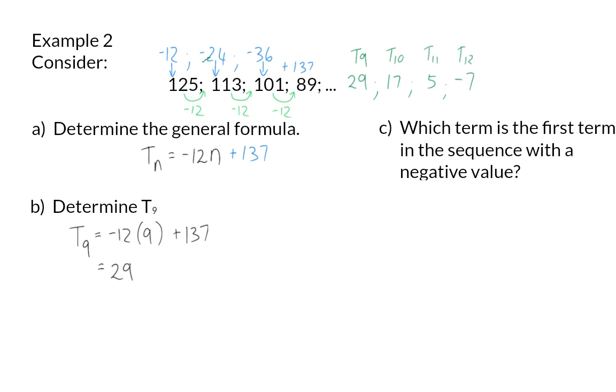You can also determine this using algebra because we want the value, which is our general formula, of the first negative term. And that means smaller than 0. So, to solve n, I am going to add the 12n on the right-hand side.